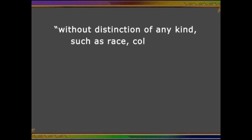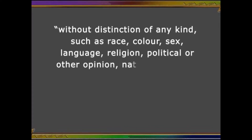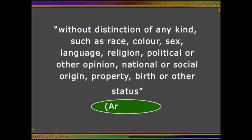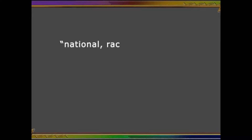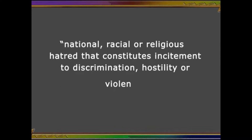ICCPR obliges states to guarantee the rights set forth in the covenant without distinction of any kind, such as race, color, sex, language, religion, political or other opinion, national or social origin, property, birth, or other status. The treaty also requires governments to prohibit any national, racial, or religious hatred that constitutes incitement to discrimination, hostility, or violence. Article 20. ICCPR also stipulates that all persons are equal before the law and are entitled without any discrimination to the equal protection of the law. Article 26.